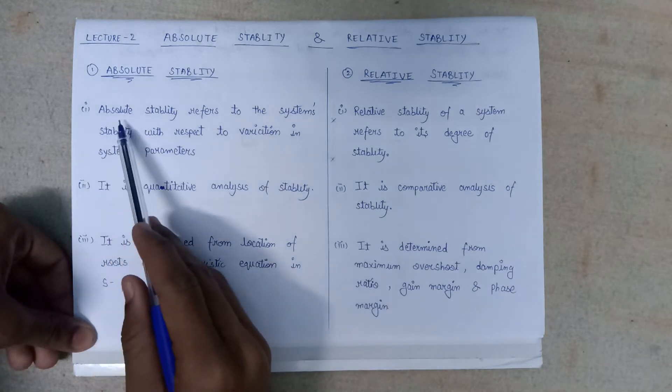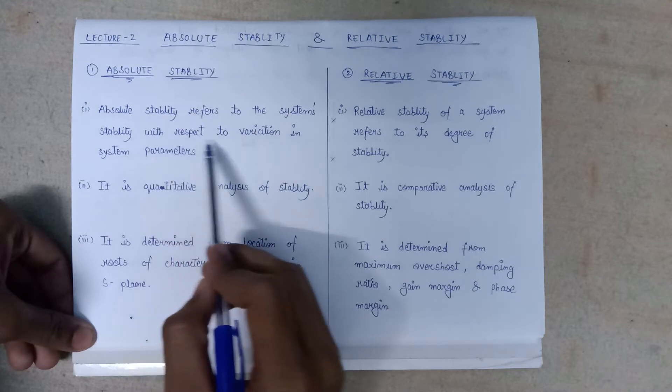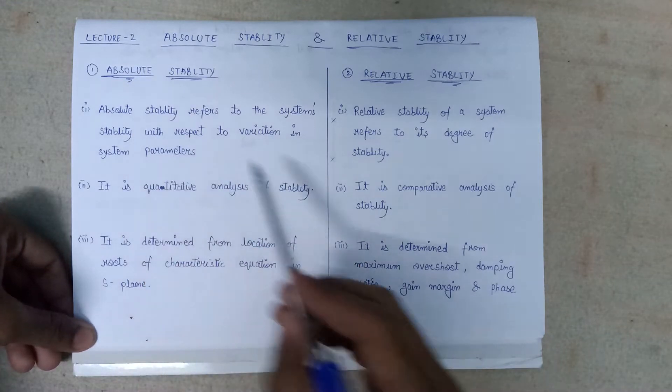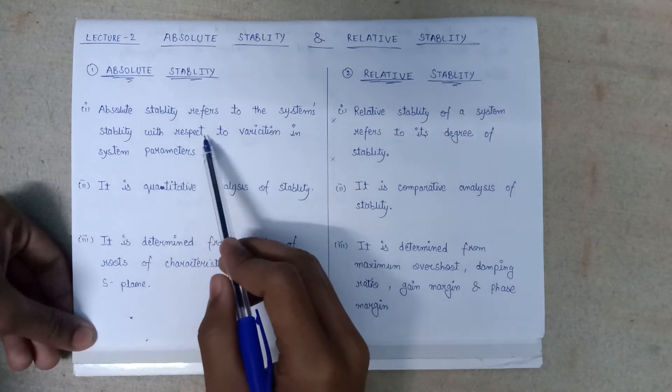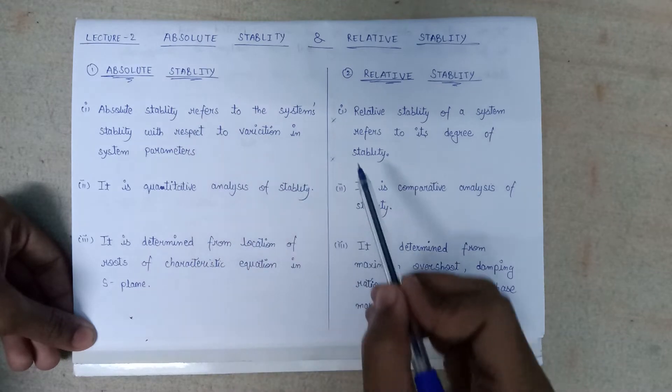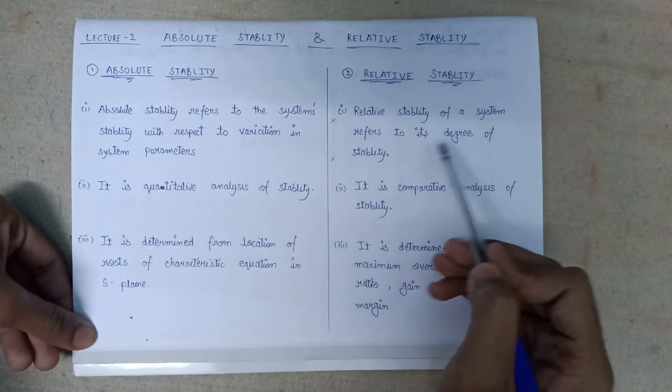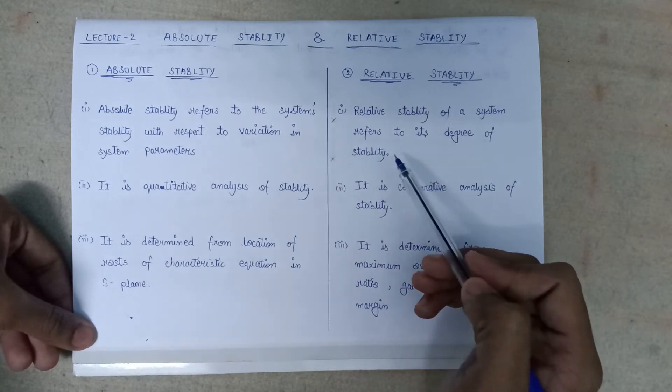What the first point says is absolute stability refers to the system stability with respect to the variation in the system parameter. So it depends upon the variation in the system parameter. Relative stability of a system refers to the degree of stability, that is how much the system is stable.